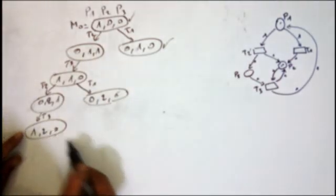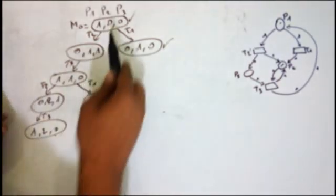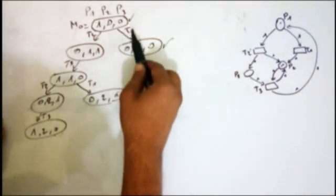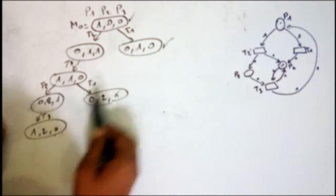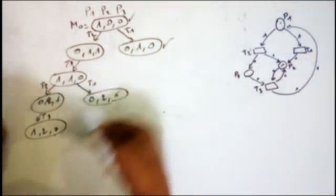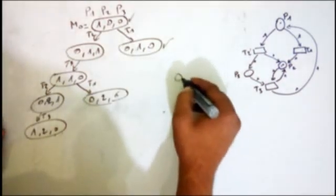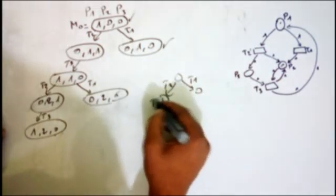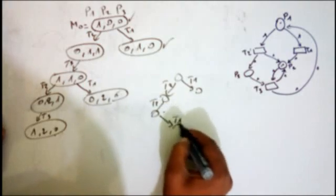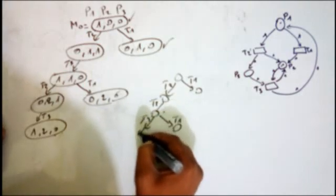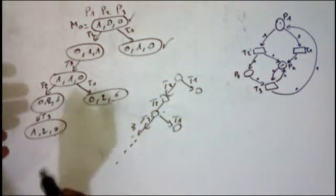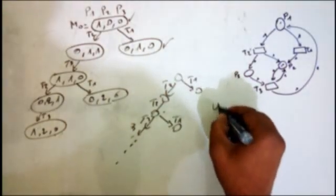You notice that from (1, 2, 0) we can fire T1 or T2, and this coverability graph — this automata where transitions are the labels — will never stop. We just keep running. So this automata keeps cycling: T1, T2, T3, T1, T2, T3, and so on. So how can we deal with this problem? We introduce the symbol W.